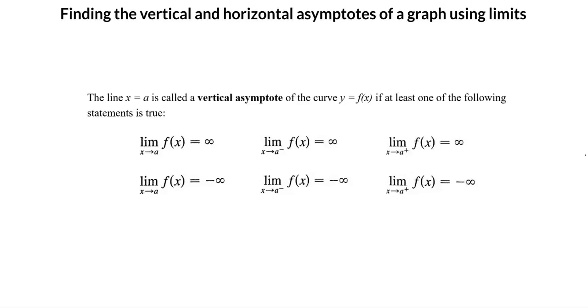The line x equals a is called a vertical asymptote of the curve y equals f(x) if at least one of the following statements is true. In this general notation, a is any number that x is approaching.